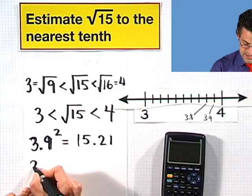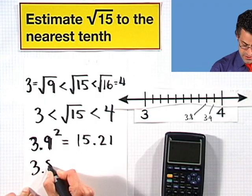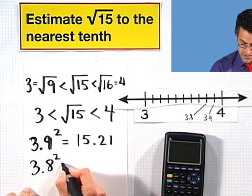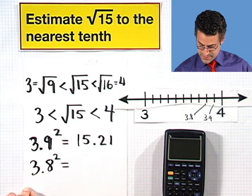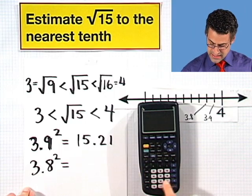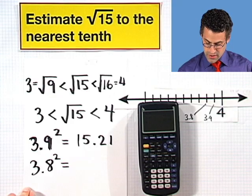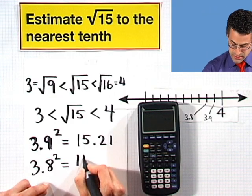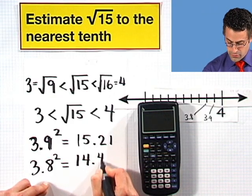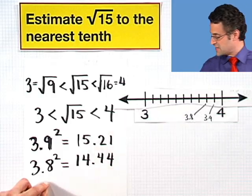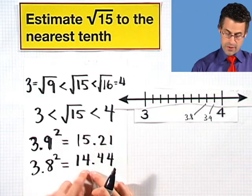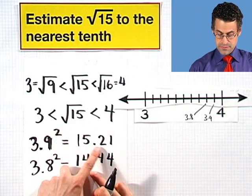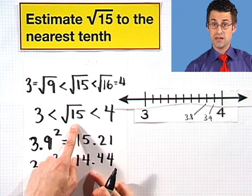So let's take a look at 3.8 and see if that's a good guess or not. Maybe that's actually a better guess. It's closer. So I'm going to square that number and see what happens. So I take 3.8 and I square it, and what I see is 14.44.